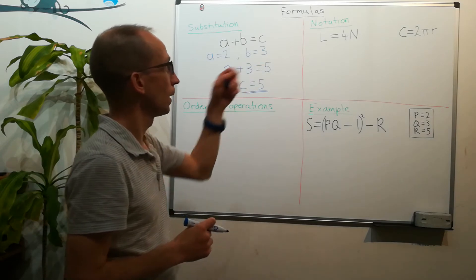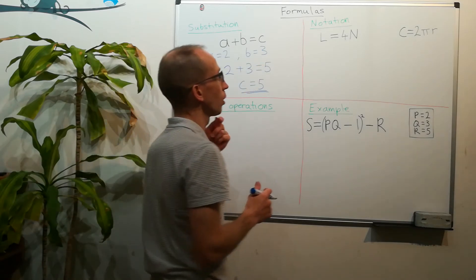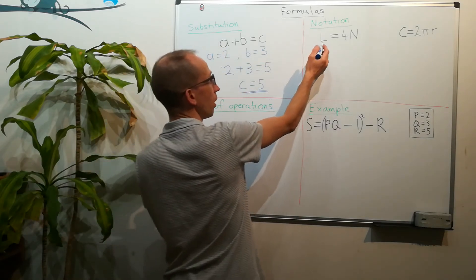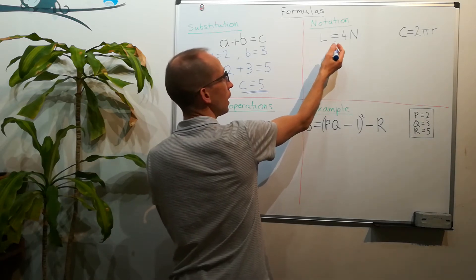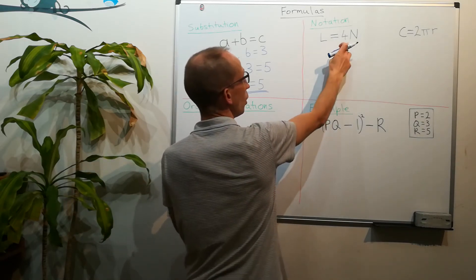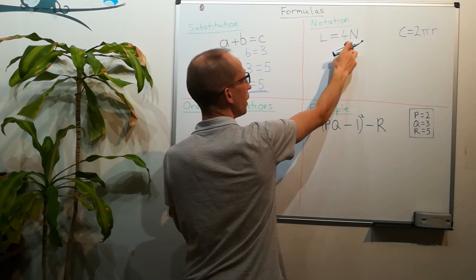Now just have a look at the notation. We might see something like this: l equals 4n. When you've got a number next to a letter, you don't need to put the multiplier sign.